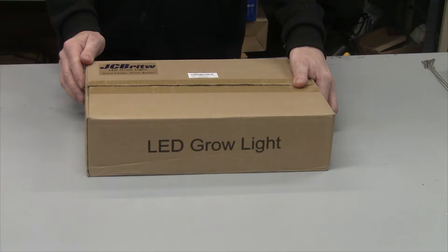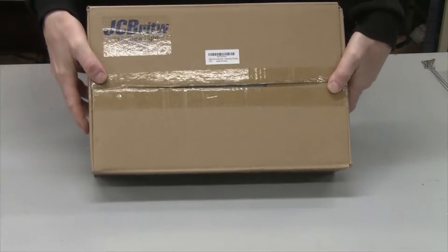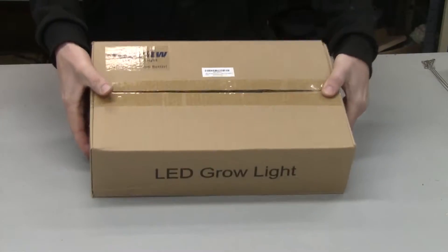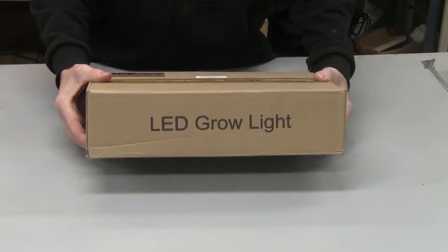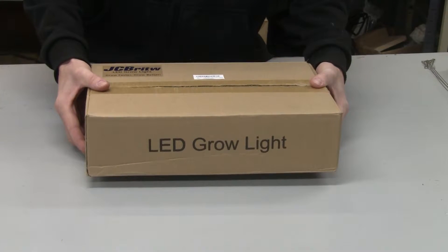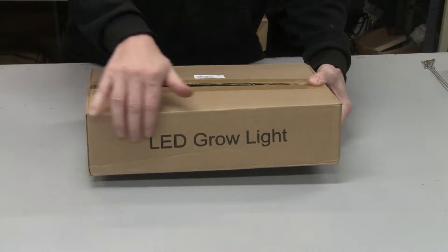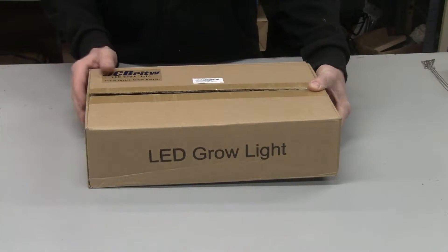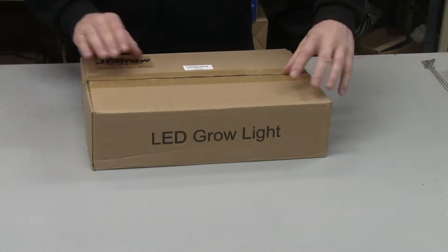Hey everybody, today we're testing out this new grow light by JCB RIT W, and it's a 300 watt. It comes in this box marked grow light on the side, but they don't ship this box directly. It'll come inside an Amazon box so your nosy neighbors won't see grow light on the side of the box.